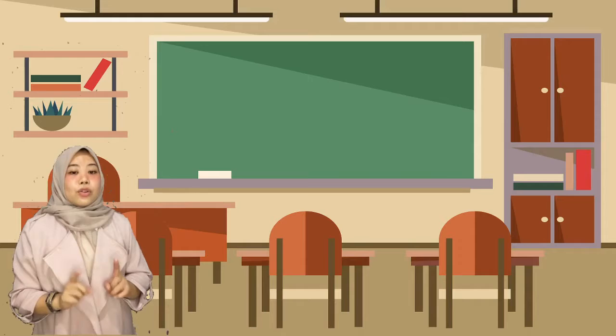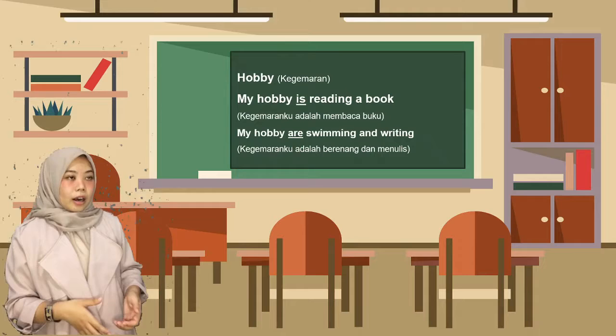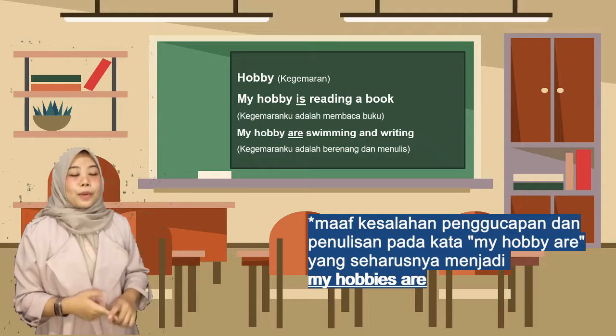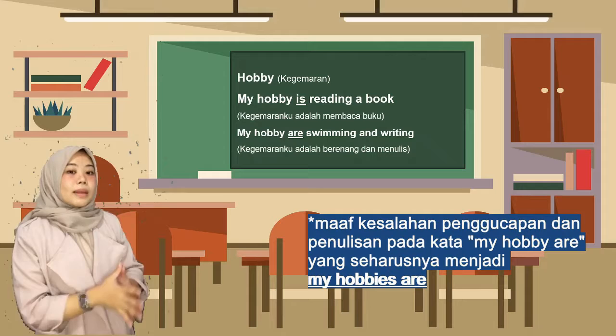Next, additional information you can share is about your hobby. For example, 'My hobby is reading a book,' or 'My hobbies are swimming and writing.' Penggunaannya sama seperti sebelumnya — untuk dua hobi kalian menggunakan 'are,' jika hanya satu kalian menggunakan 'is': 'My hobby is' atau 'My hobbies are.'